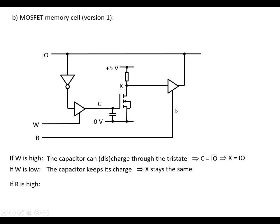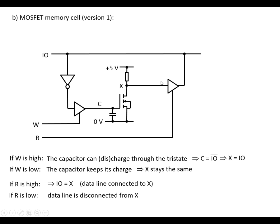If R is high, then X is going to be connected to the data line. And if R is low, then it's disconnected — the data line is disconnected from X. So in that regard, it works exactly the same as the flip-flop memory cell.